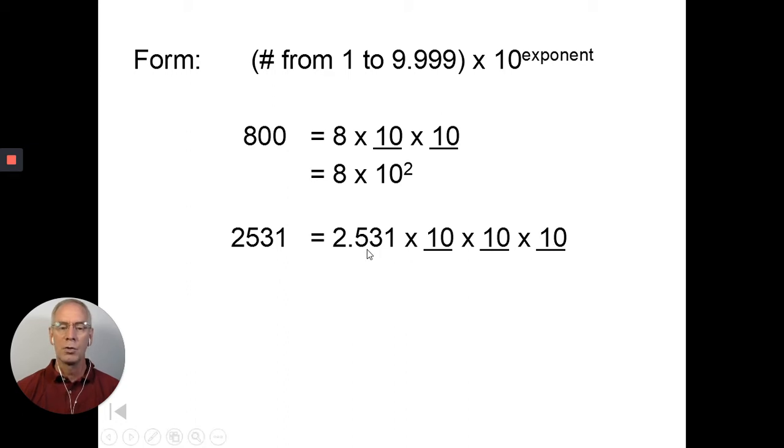2531. So 2.531 times 10 times 10 times 10 is times 10 cubed. So we write that 2.531 times 10 to the third power.